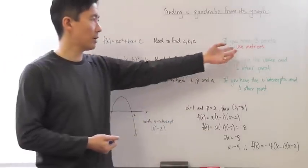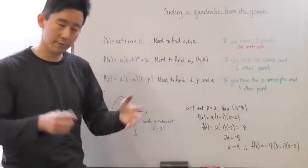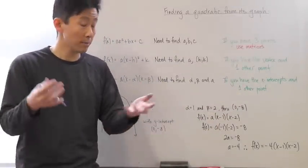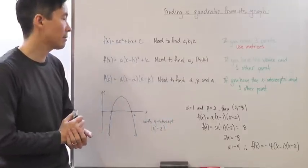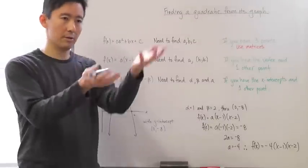So, for example, if you have three unrelated points, not the vertex, not the x-intercepts, possibly the y-intercept, but three points that are just all over the curve...